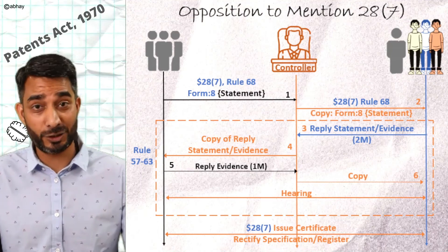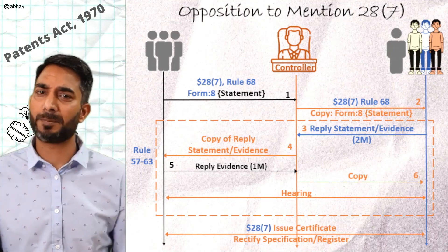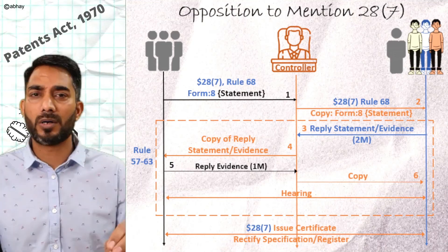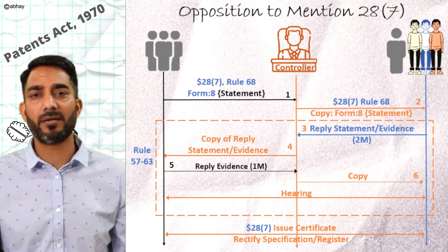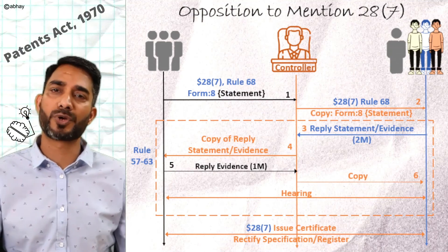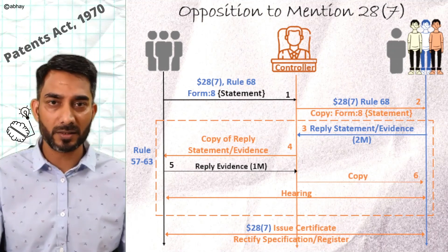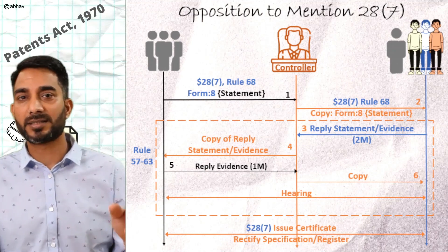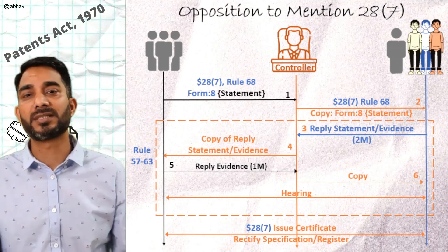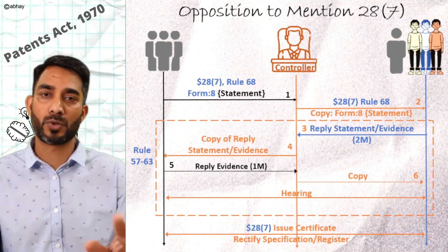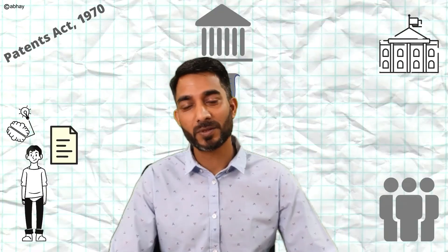Once the hearing is concluded, the controller can issue a judgment either by maintaining the status quo — keeping the mention of the person as inventor — or by removing such a mention. In cases where the controller decides to remove the mention, the specification and all other relevant documents need to be rectified, and a certificate to that effect is issued confirming that the person's name has been removed and is no longer mentioned as the inventor.